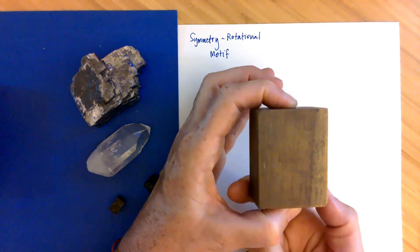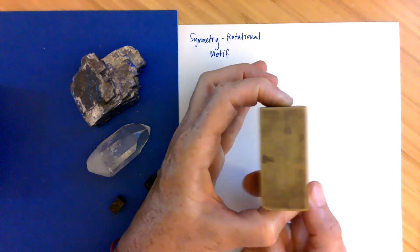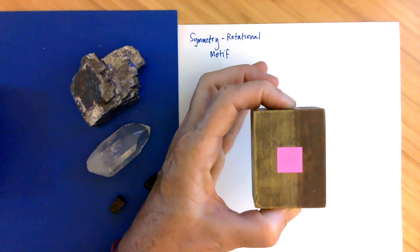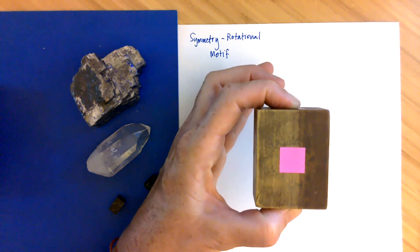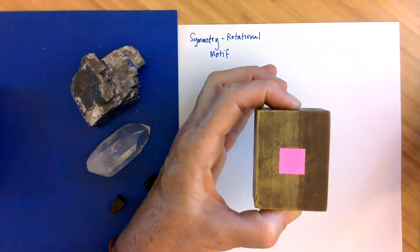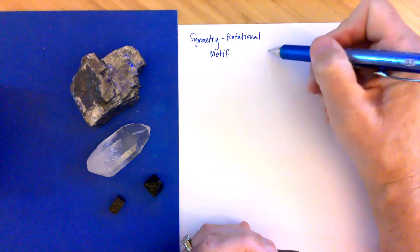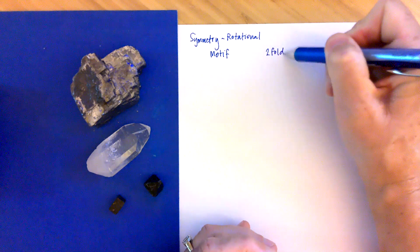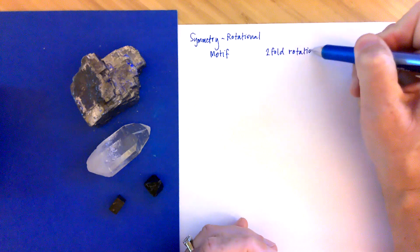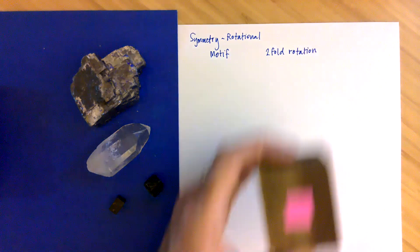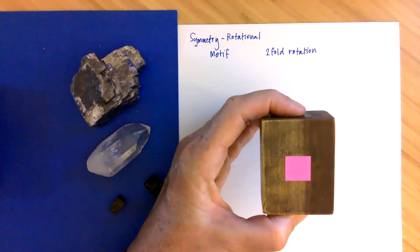Now I see a skinny rectangle, then there's my starting rectangle motif again — I've seen it now twice. I continue to rotate: that's not it again, and now I'm back at the beginning. So this motif appears two times, which I can note as two-fold rotational symmetry — we're talking about this axis as having two-fold rotation.